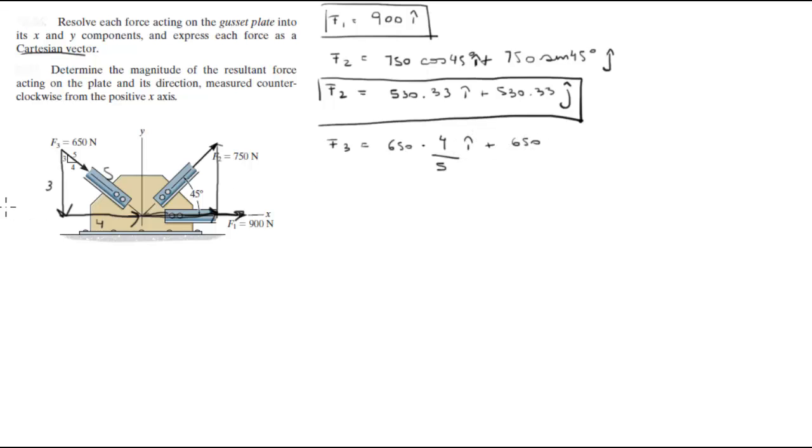Plus 650 and now you do times 3 because we're trying to get the Y—actually it's not plus, this is minus because we're going down on the Y axis—times 3 over 5. That's how you calculate this. And when you solve this you're going to get that the first one is 520 I minus 390 J. This is F3.